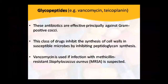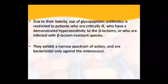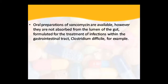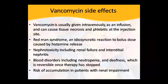Vancomycin is used for serious infections. It is used especially for MRSA infections. Glycopeptide toxicity is monitored. It is used when there is hypersensitivity to beta-lactams or beta-lactam resistant species are present. It has a narrow spectrum action, but it is very effective against gram-positive cocci. Vancomycin is available in oral preparation but is not absorbed in the gut — so oral vancomycin is used specifically for gut infections like Clostridioides difficile.